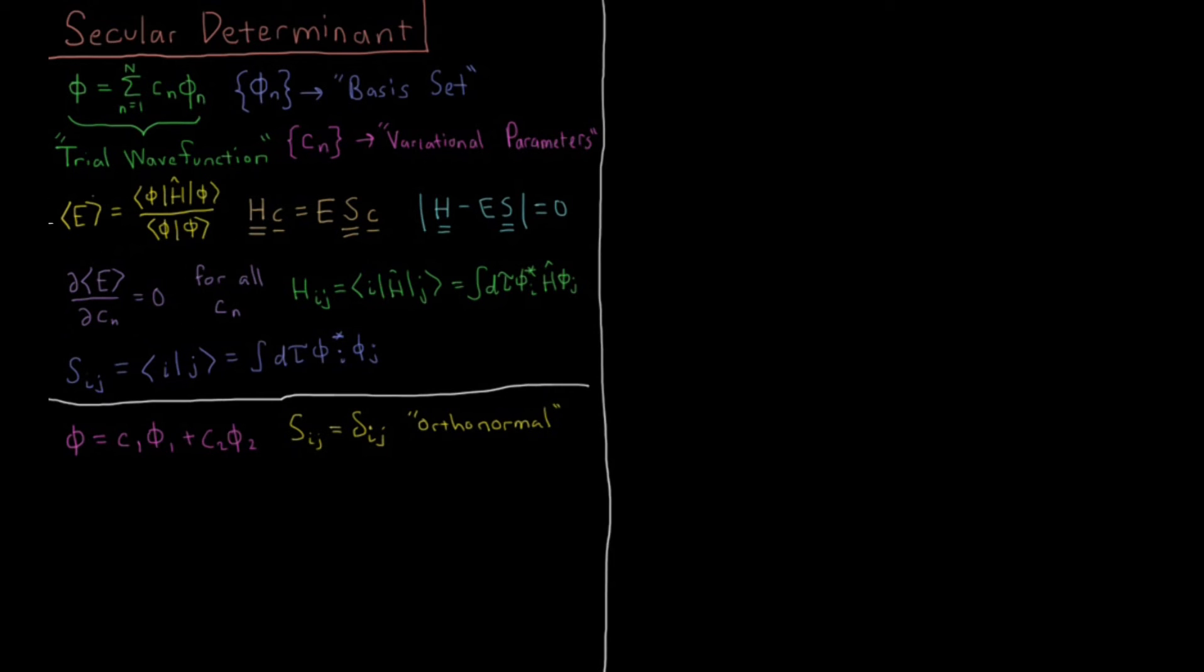So trying to enforce this condition with this expectation value of energy for a trial function which looks like this, we saw led to a set of equations, which is Hc = ESc, where our Hamiltonian matrix here is composed of matrix elements, which are the individual φ*i, H acting on φj, integrated over the entire range of the wave function. That's our Hamiltonian matrix H.